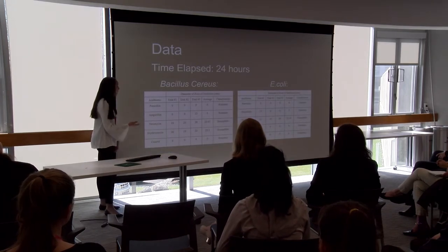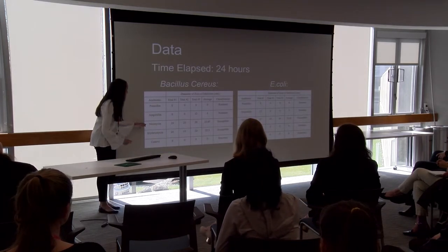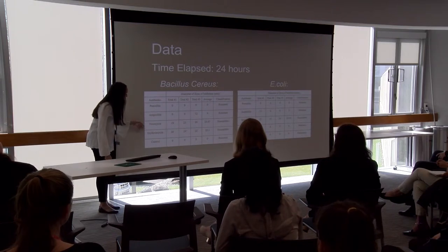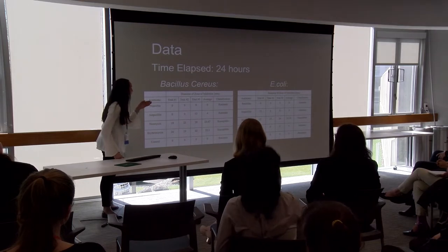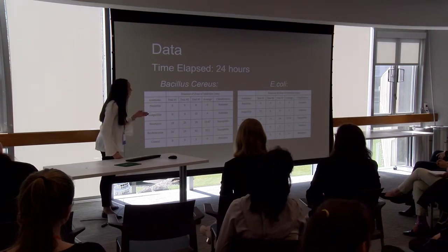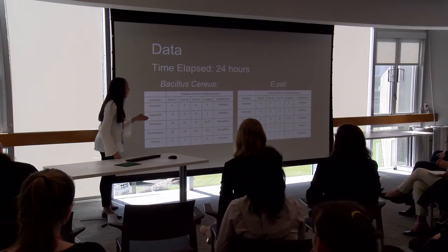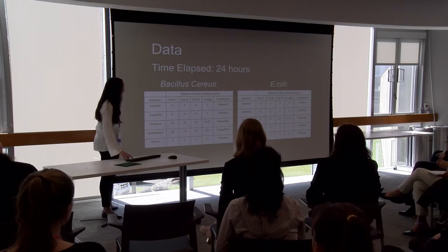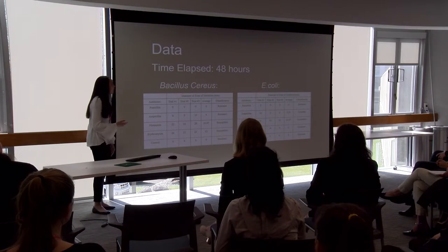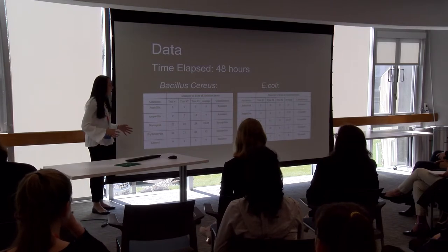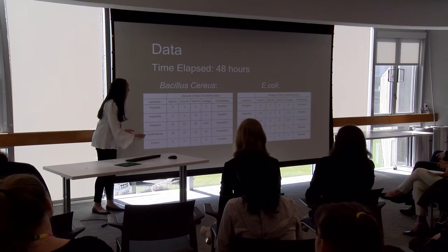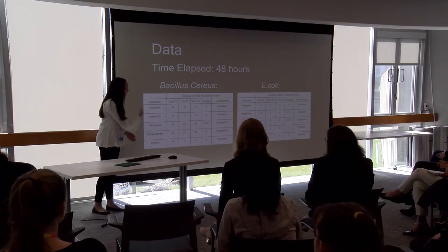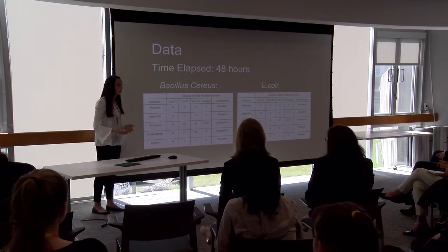After 24 hours, the Bacillus cereus clearly had a very large zone of inhibition for neomycin and erythromycin, telling me it was susceptible to both. The E. coli had a very large zone of inhibition just for neomycin, telling me it was susceptible to that one, and resistant to the rest. After 48 hours, there wasn't a huge change in data susceptibility-wise — the same antibiotics remained resistant, and the same were susceptible.